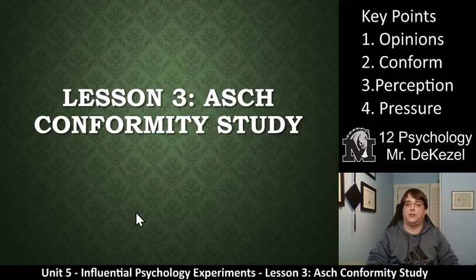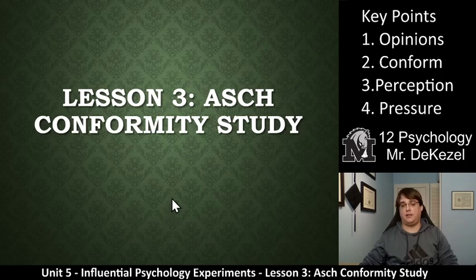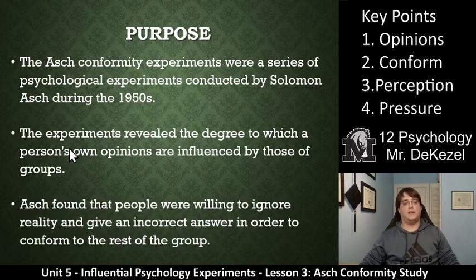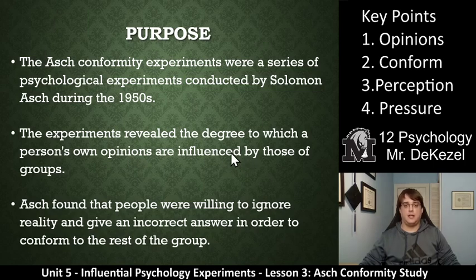You can see that key point two is conform. So if you're not sure what conforming is, definitely look that up sooner rather than later. The purpose of the Asch Conformity Study: there are a series of experiments conducted by this guy named Solomon Asch during the 50s. The experiment revealed the degree to which a person's own opinions are influenced by those of groups. So essentially, if you're in a group, does your opinion change based on the majority opinion within that group? Is it influenced by the people around you?